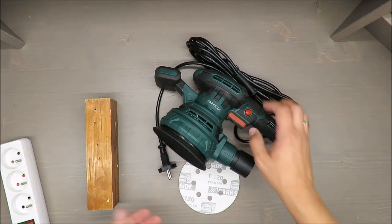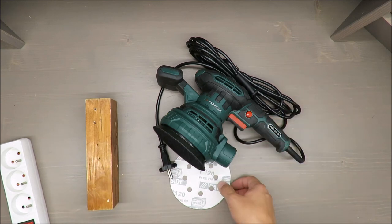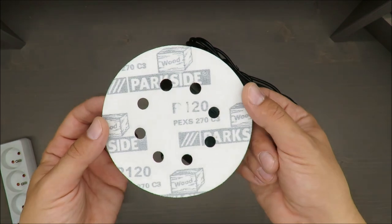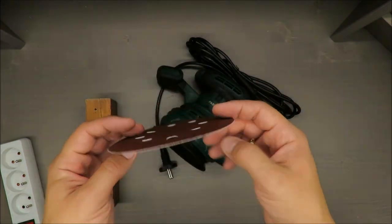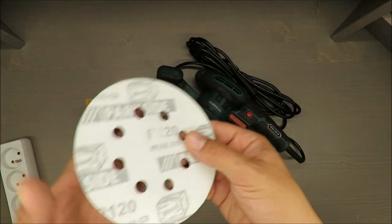For this test, I will not use this compartment. I will use this sanding paper sheet that's included. Only one is included, and it has 120 grit.